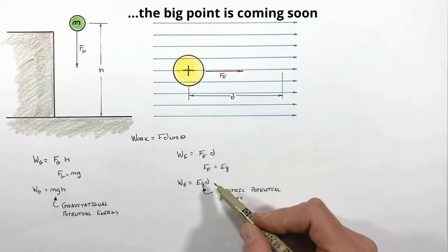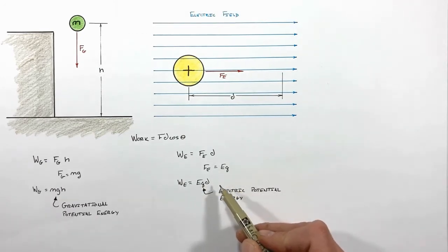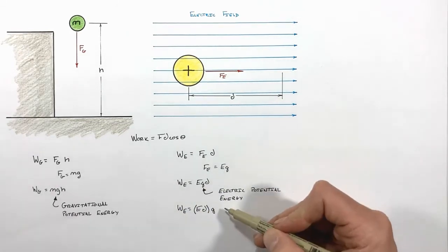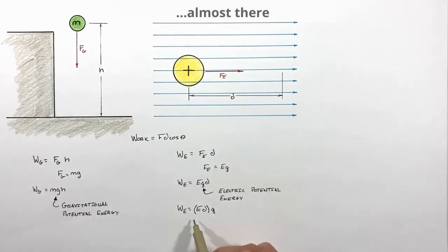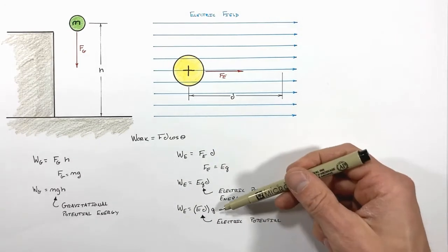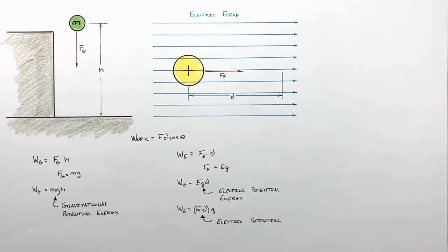So looking at our equation for the work done by the electric field, we can pull out our term Q, which is going to leave us with this. Now it's not super obvious as to why, but we're going to refer to this term ED as the electric potential. So the electric potential multiplied by the charge in the field will simply give us the work done by that charge.